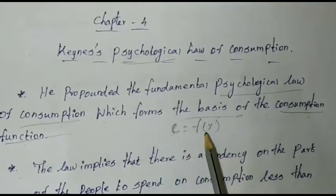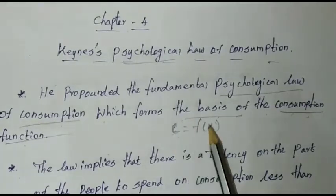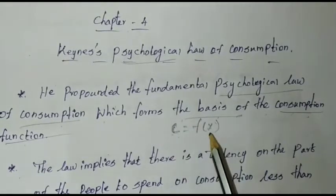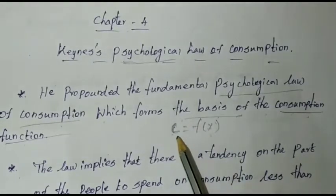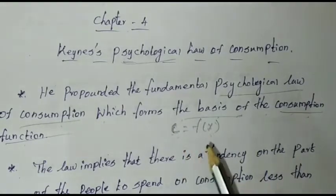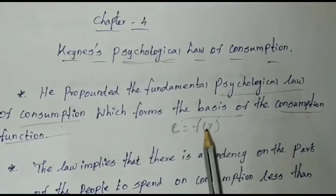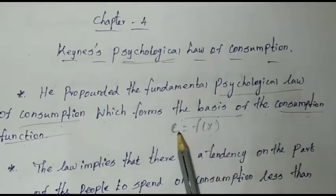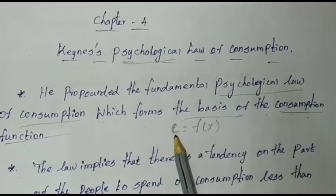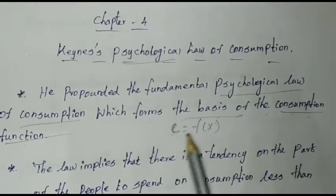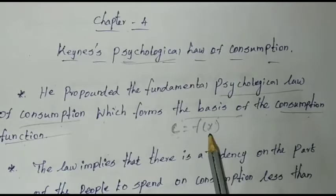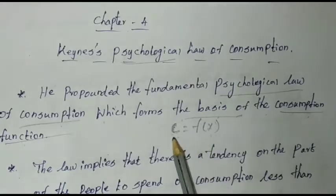The consumption always depends on income — that is why we use this. The consumption is not a matter independent of income. If you are buying consumption, you should spend a little amount proportional to income.